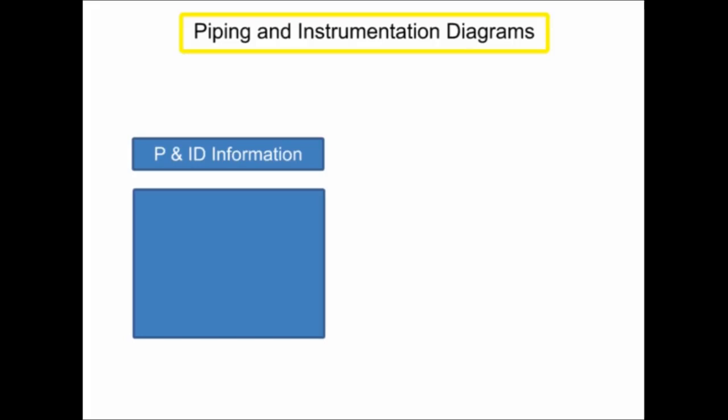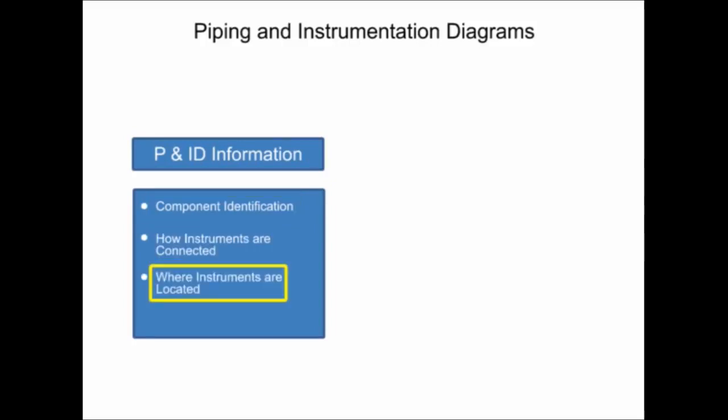Piping and instrumentation diagrams provide information that includes component identification, how instruments are connected, where instruments are located, and their function within a process.